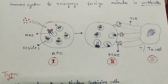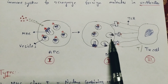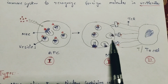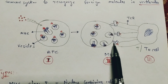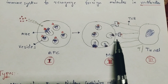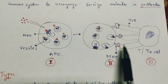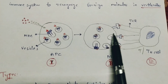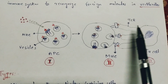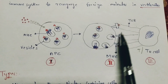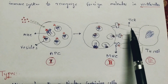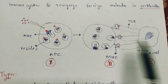The MHC molecule then leaves the vesicle and is exposed towards the immune system — that is, exposed outside on the cell surface. It remains attached to the cell surface but is exposed outside, along with the antigen. This completes the second step.